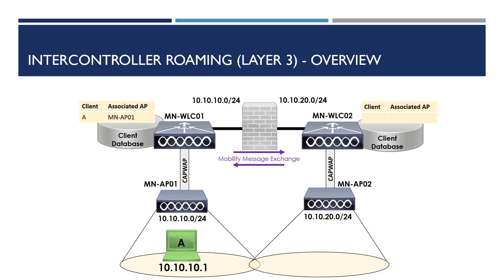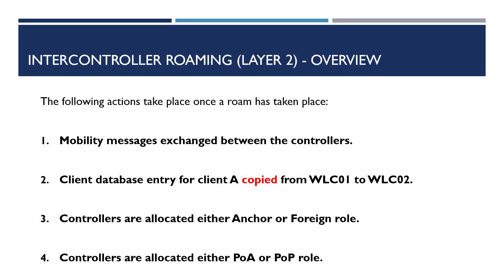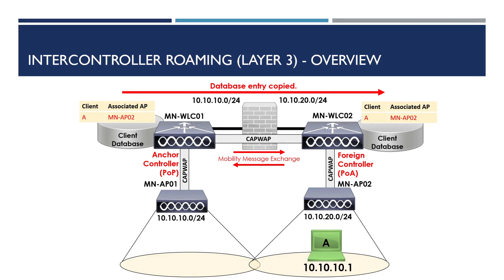When client A roams to AP02, the IP address it had while associated to AP01 won't work. The client would normally need to request a new IP address from a DHCP server, which would cause significant disruption, especially for real-time applications. Thankfully, Cisco has a solution for seamless roaming. When client A roams from AP01 to AP02, mobility messages are exchanged between WLC01 and WLC02, the client database entry for client A is copied from WLC01 to WLC02, and controllers are allocated either the anchor or foreign controller role. WLC01 becomes the anchor controller and WLC02 becomes the foreign controller.